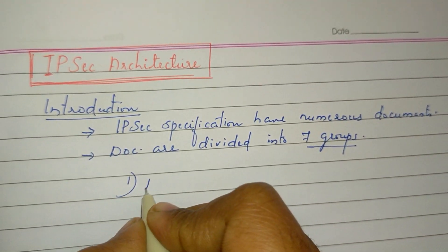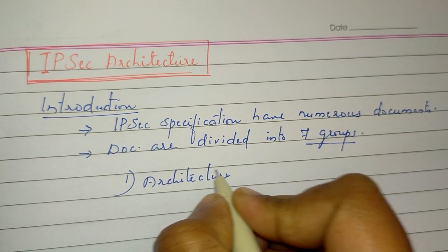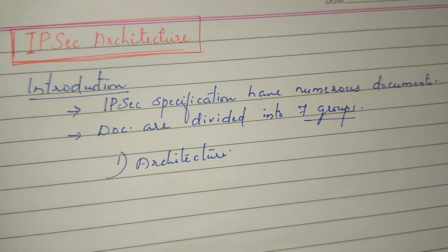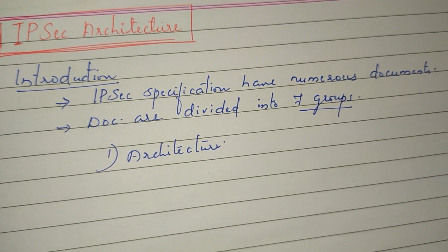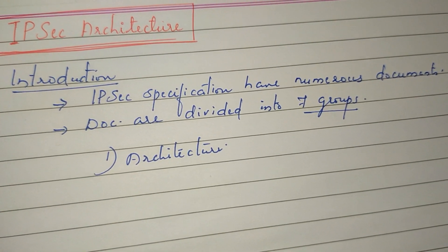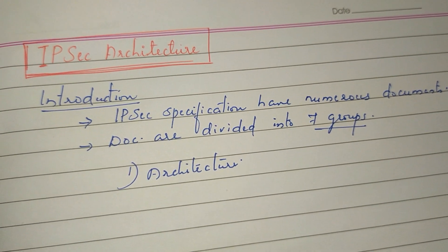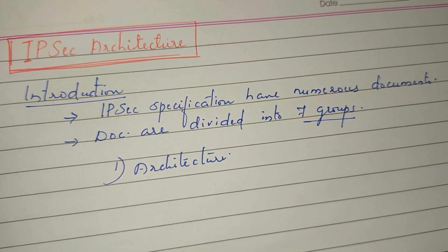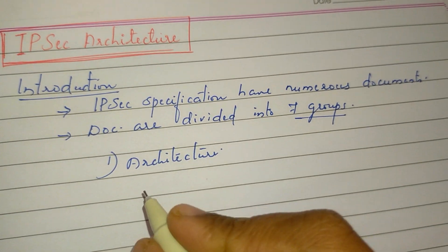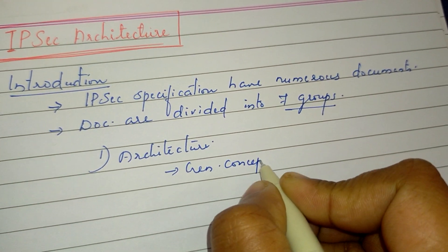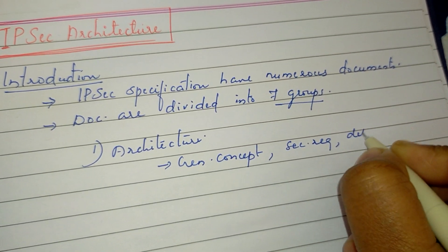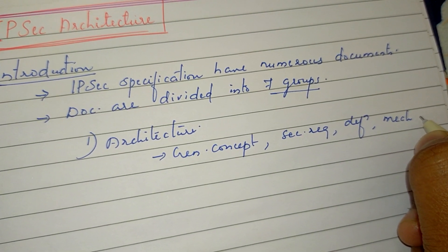The first group is Architecture. This covers the general concept, security requirements, definitions and mechanisms — essentially the IP Security Technology that defines the mechanisms.